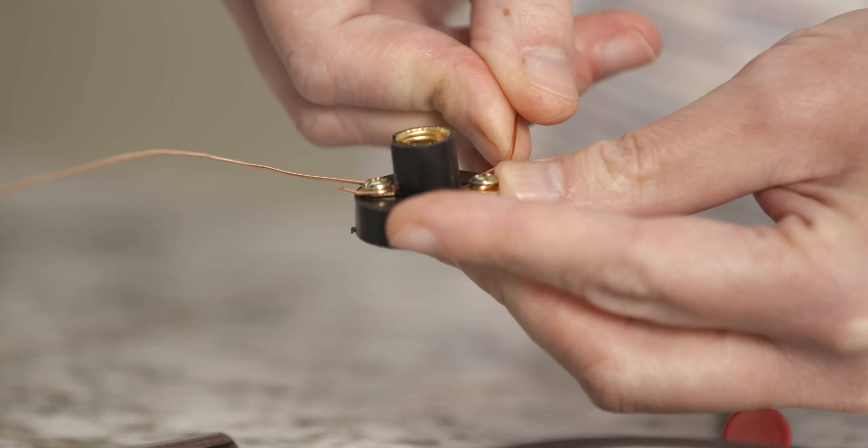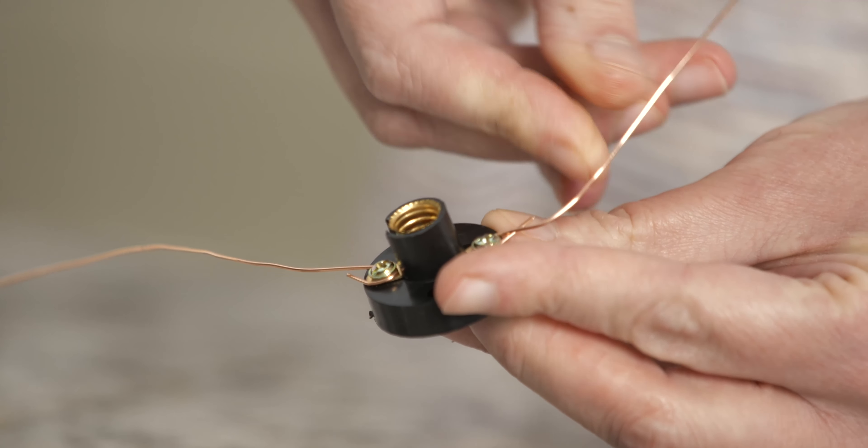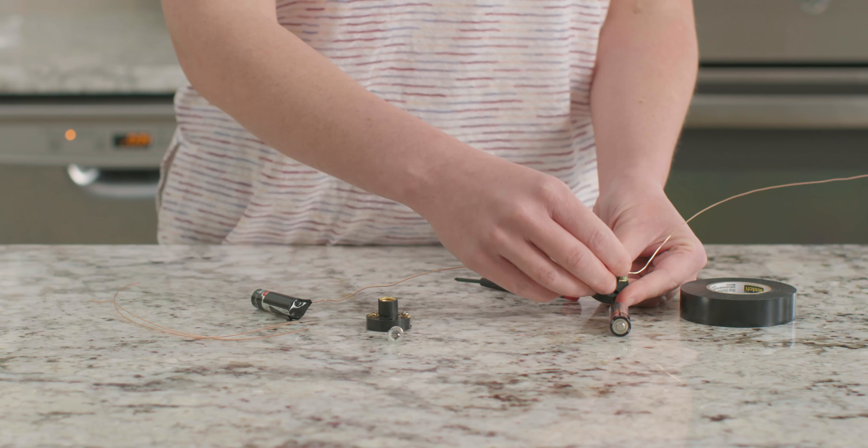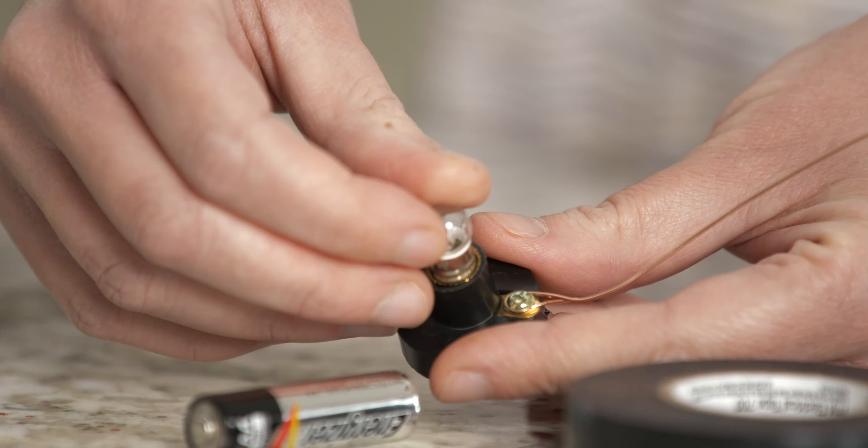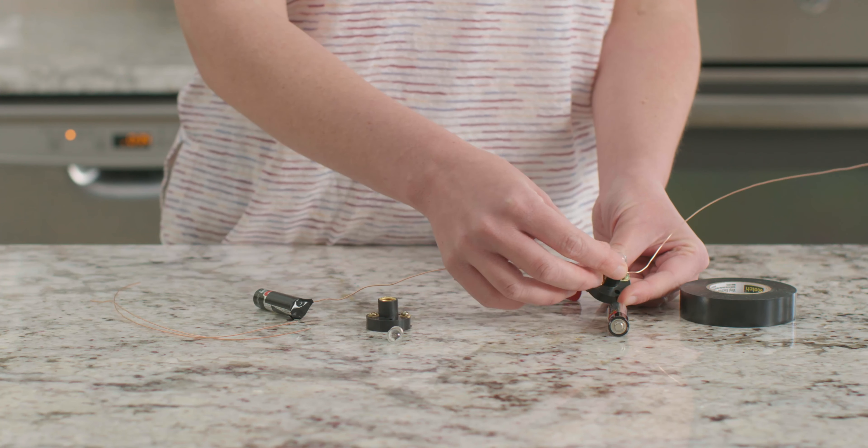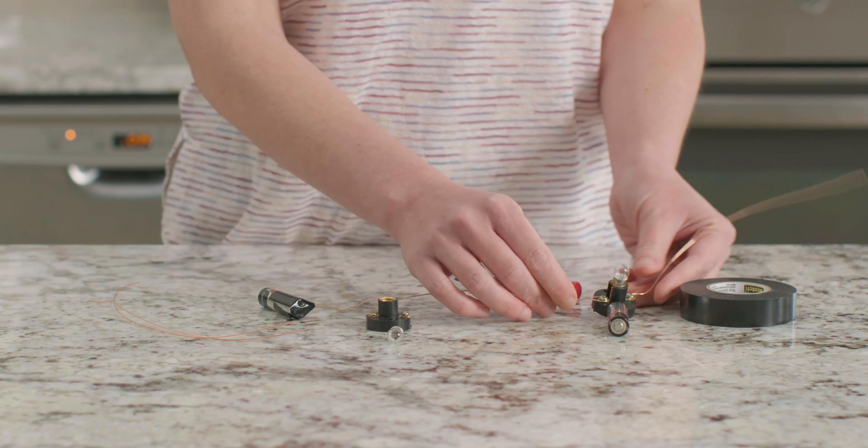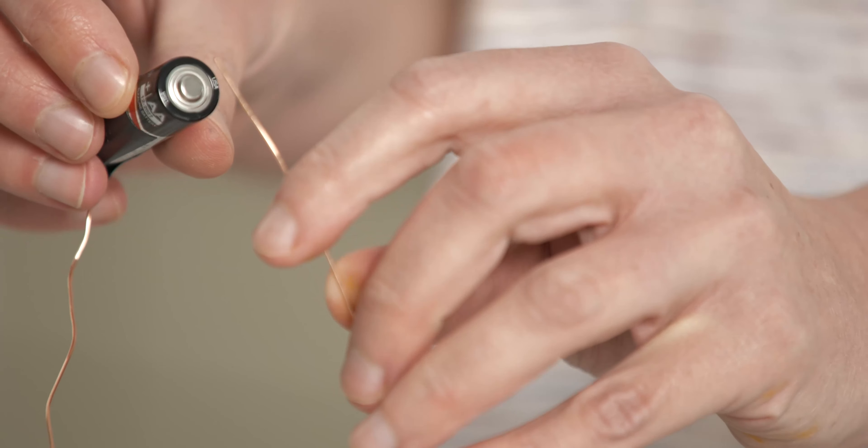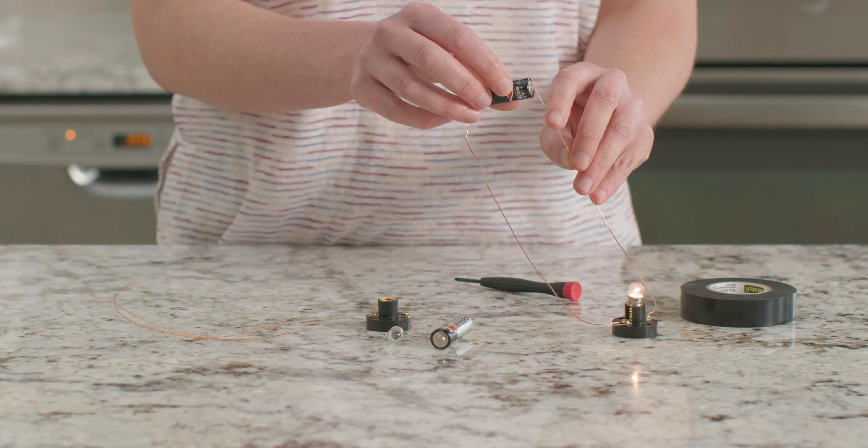Now let's take another piece of wire and attach it to the other terminal on our bulb holder. Before we complete the circuit let's screw in one of our bulbs. All right, let's see if our circuit works. Touch the end of your loose wire to the positive terminal of the battery. Look, our circuit worked!